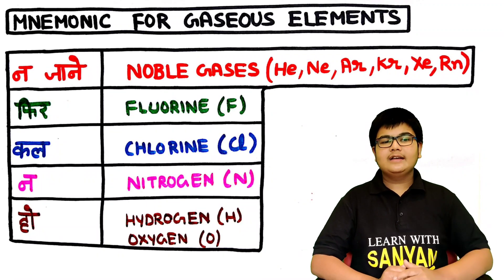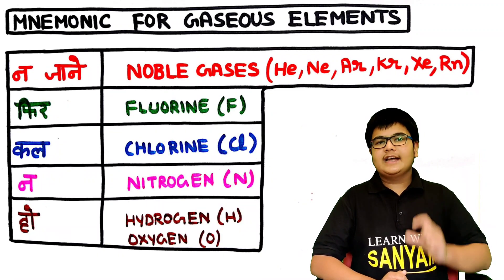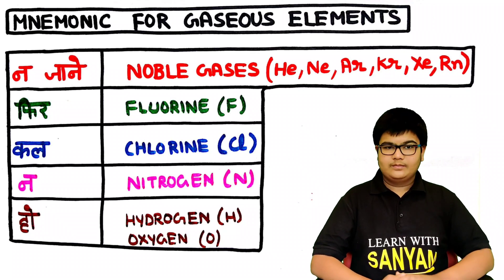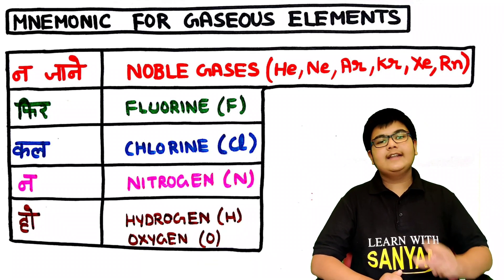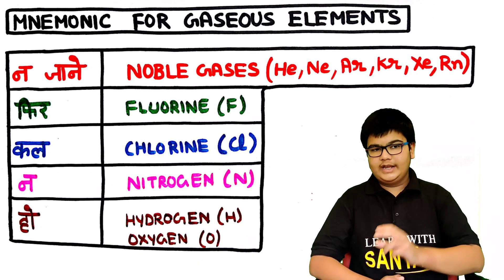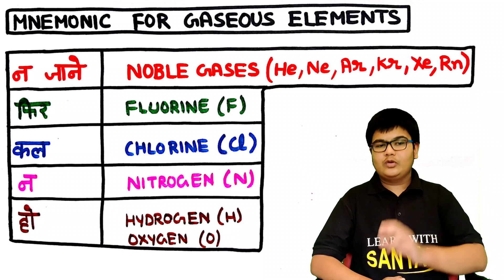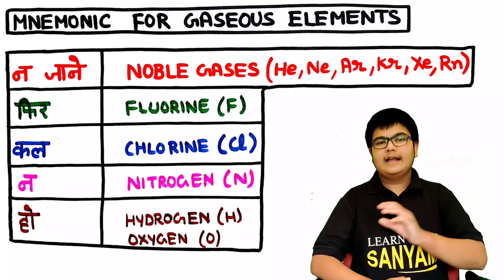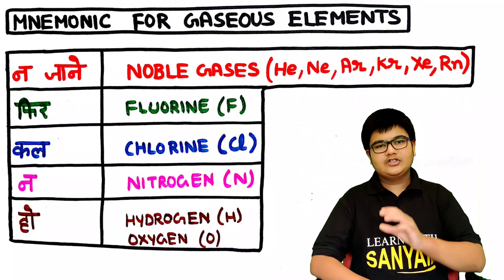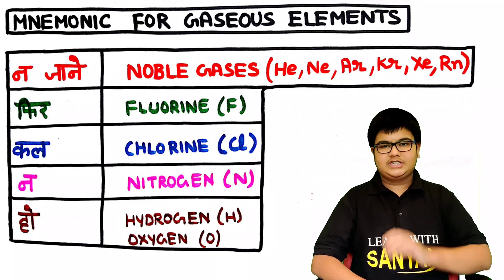Let's repeat the mnemonic: na jaane fir kal na ho. Na jaane — noble gases; fir — fluorine; kal — chlorine; na — nitrogen; ho — hydrogen and oxygen.